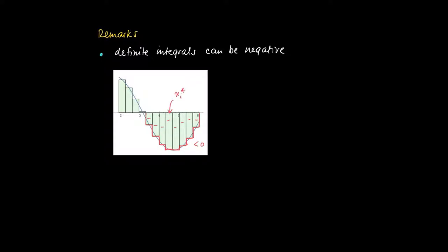If we take some sample point over here, then f(xi*) is lower than zero. So f(xi*) times delta x is now contributing in a negative fashion. Definite integrals can be interpreted as surface areas, but only for non-negative functions.